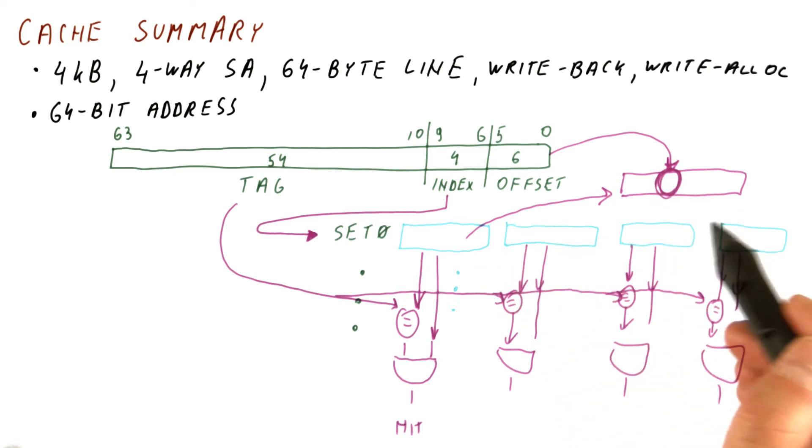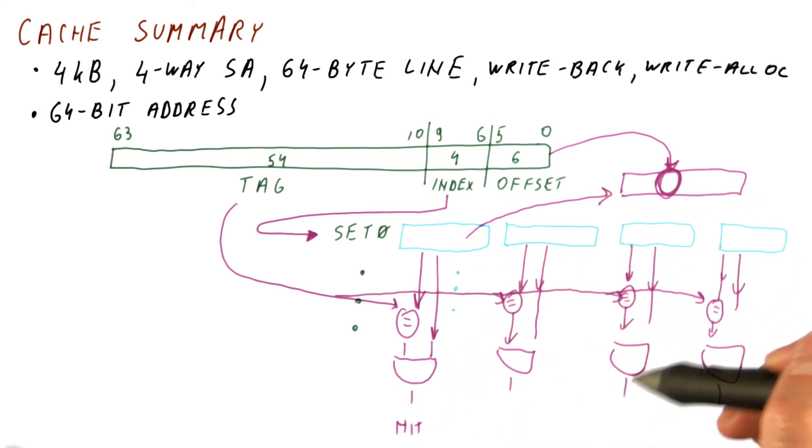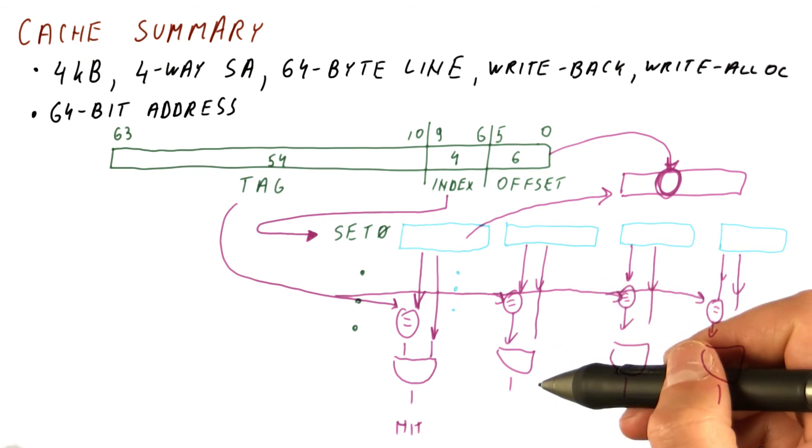So if we have a hit, this is how we find the data. What if we have a miss? What if all of these have returned 0? In that case,